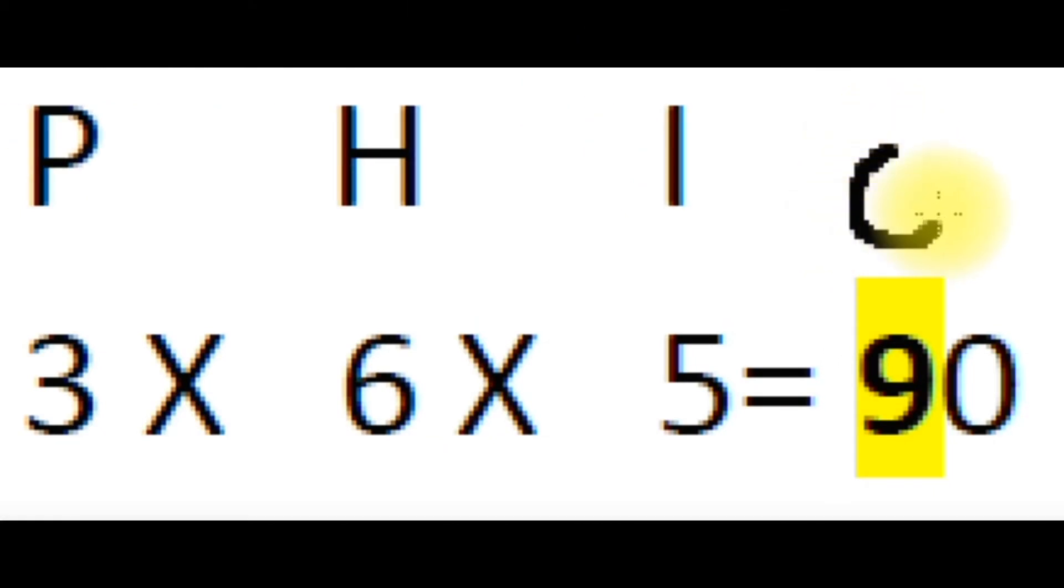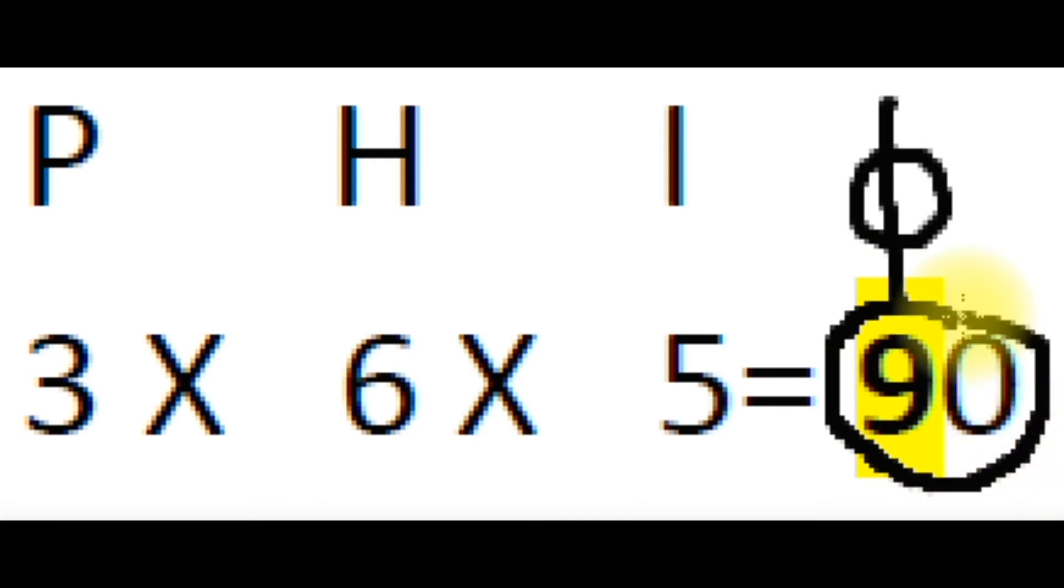By the golden ratio, the golden mean one point six one eight, using the English septenary cipher has a product letter value of 90, the digital root value of nine. Three six five, the number of days in a solar year.